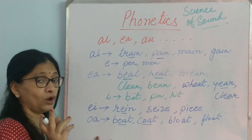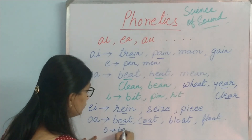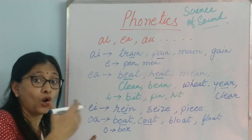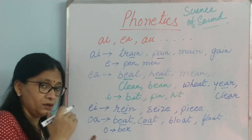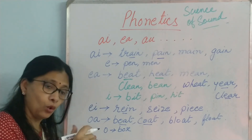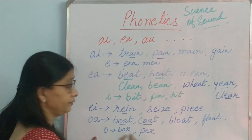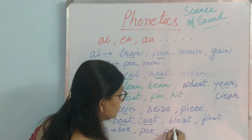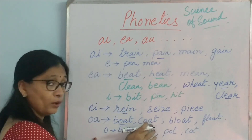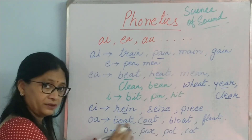But O sound we got from O alone also. Let us see the difference. With O we have box — it is more of a short O sound. But with OA it is boat — a long O sound. Box, pox, pot — those have the short O. But when we add OA it becomes coat — long O. Can you see the difference?